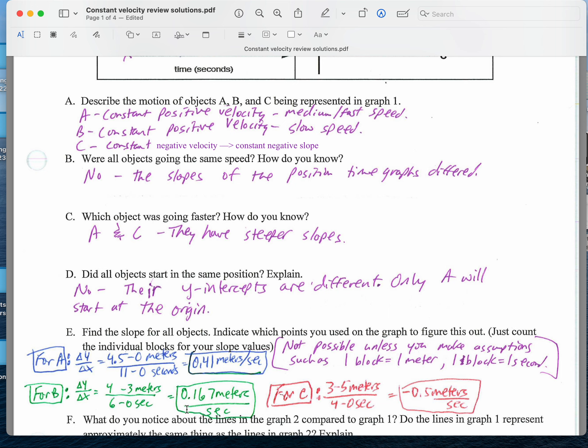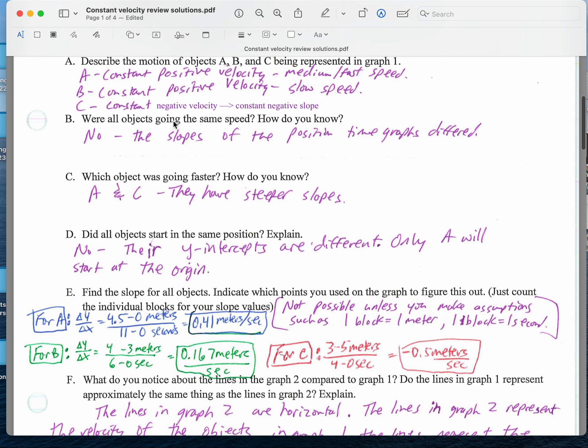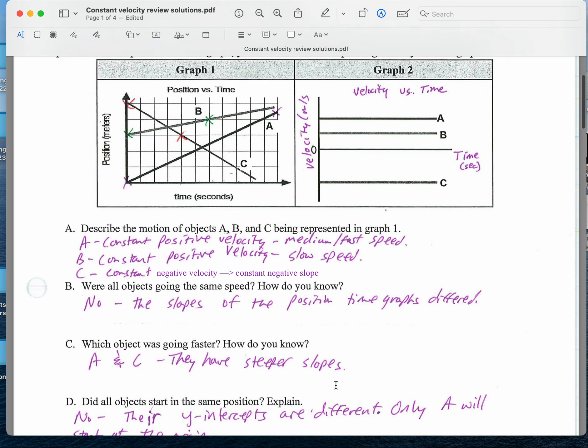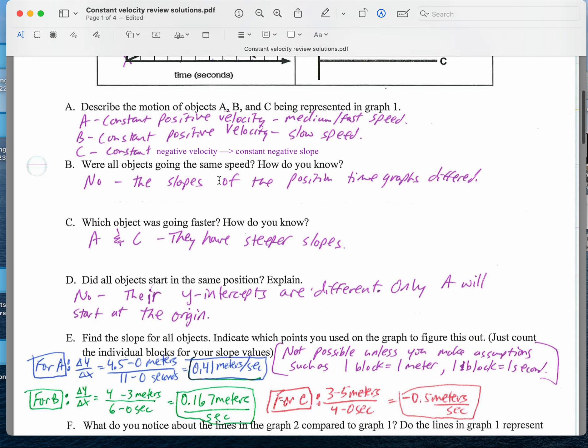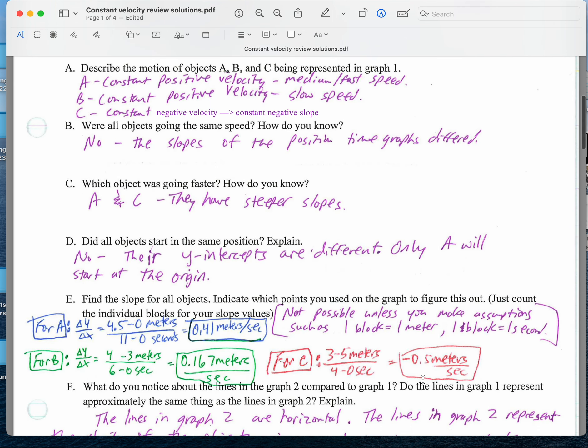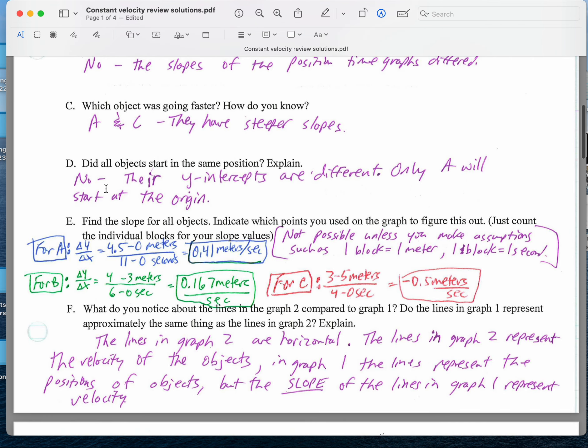For B, I took these two points, took 4 meters minus 3 meters, and that took about 6 seconds. So 1 meter over 6 seconds. It's about 0.167 meters per second. For C, it starts at 5 meters. At this point, it's 3 meters. That took 4 seconds. So it's about negative 0.5 meters per second. So I guess technically for this one, C is going the fastest. But that was unclear to me before I'd done the calculation.